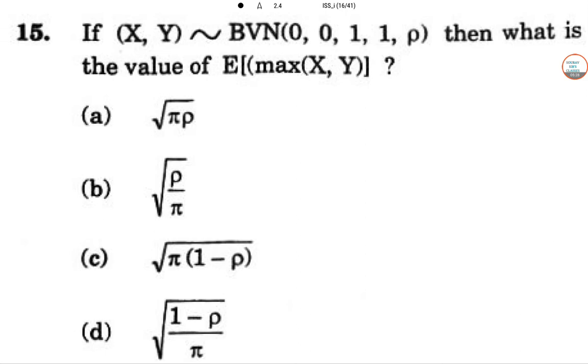If X and Y is a bivariate normal distribution with 0, 0, 1, 1, rho, then what is the value of the expectation of max of X, Y? So X, Y is a bivariate normal distribution. So max of X, Y is determined by half of X plus Y plus half of X minus Y.